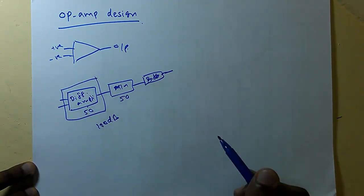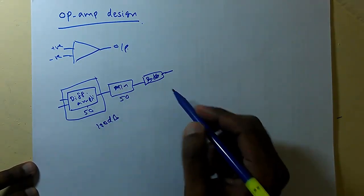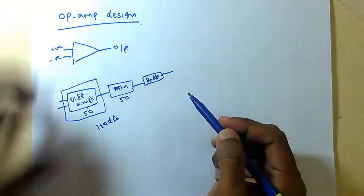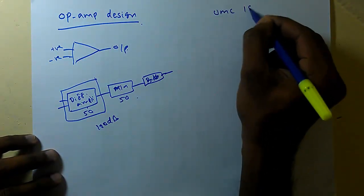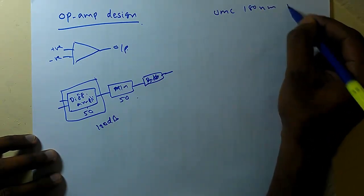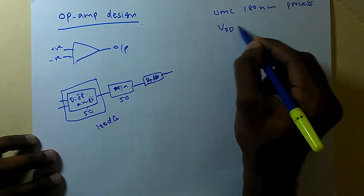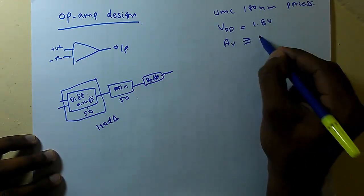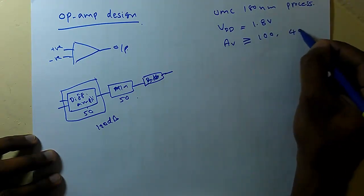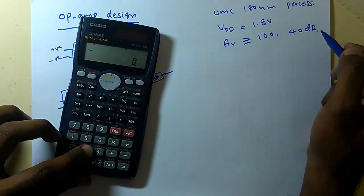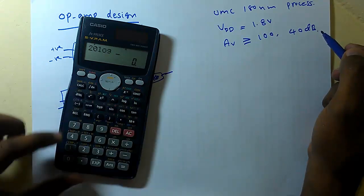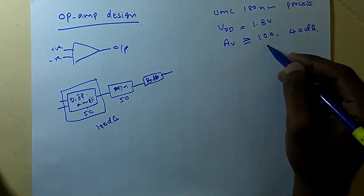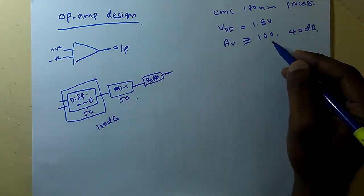So first we will design the differential amplifier stage, analyze the circuit, then design the second stage and the final buffer stage. We will be using the UMC 180 nanometer process, so VDD is 1.8 volts. Let's design for a voltage gain greater than 100, which is 40 dB, since 20·log(100) = 40. A gain greater than 40 dB is not sufficient for a full op-amp, but it is okay for a diff-amp.